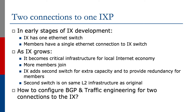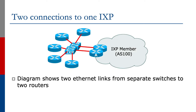This second ethernet switch would be on the same layer 2 infrastructure as the original switch. So how do we configure BGP and the traffic engineering for two connections to this IX? The diagram shows the two ethernet links from separate switches to the two routers in the IXP member AS100.